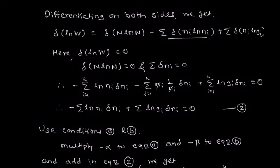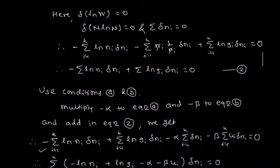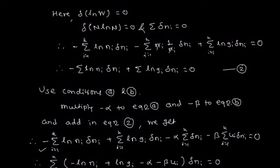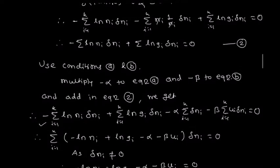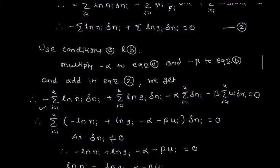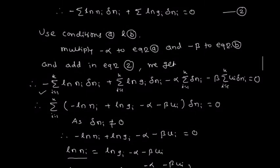Adding the modified conditions into equation 2, it becomes: minus summation i equals 1 to k of log(ni)·δni plus summation i equals 1 to k of log(gi)·δni minus alpha·summation i equals 1 to k of δni minus beta·summation i equals 1 to k of ui·δni equals 0. Taking δni common, we write the bracketed term: summation of (minus log(ni) plus log(gi) minus alpha minus beta·ui)·δni equals 0. Since δni is not equal to 0, the bracketed term must equal 0.